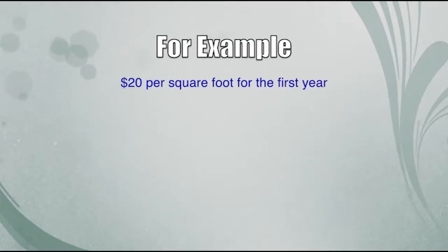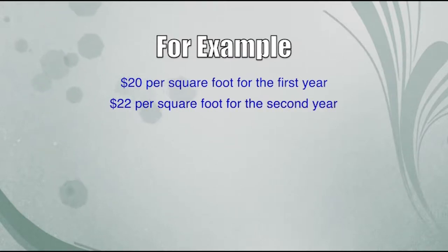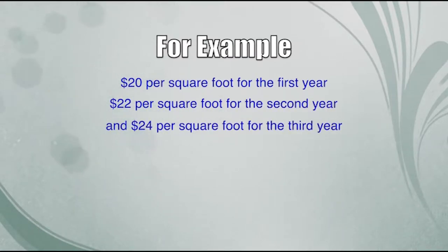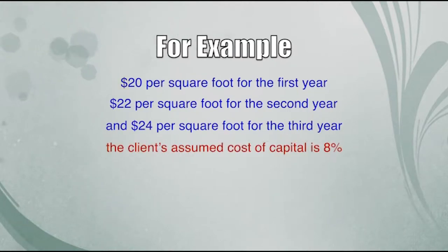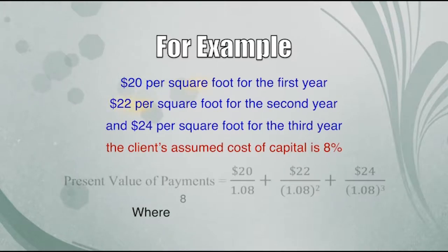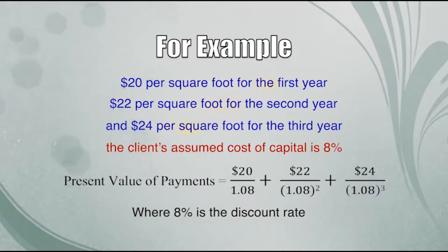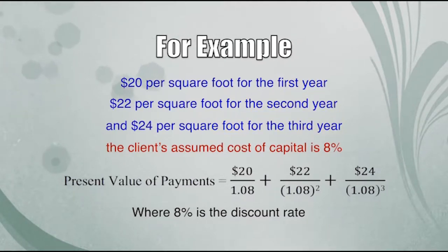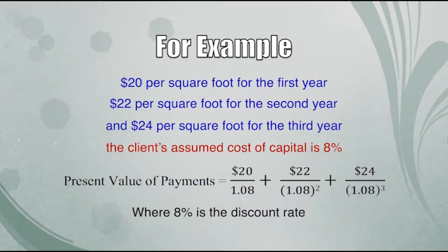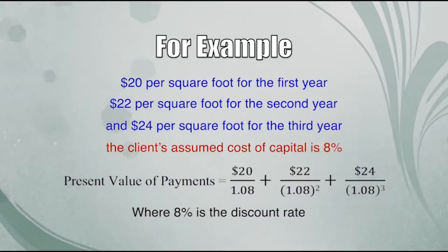For example, if a full service lease calls for $20/sq ft in year one, $22 in year two, with no other expenses, and the client's assumed cost of capital is 8%, we can discount the payments using: cost ÷ (1 + discount rate)^year. So in year three when cost is $24/sq ft, we discount by (1 + 8%)^3. This is an advanced concept covered in greater detail in the investment video series.